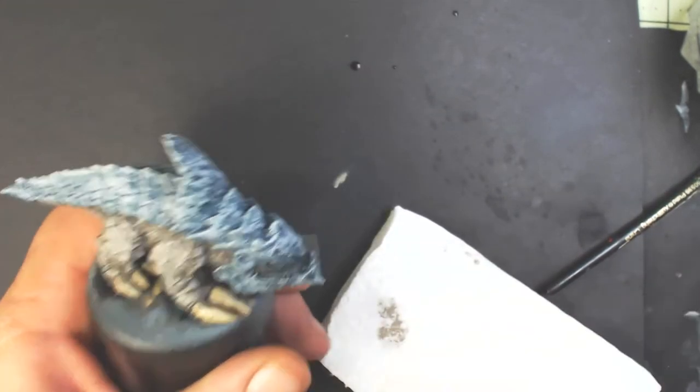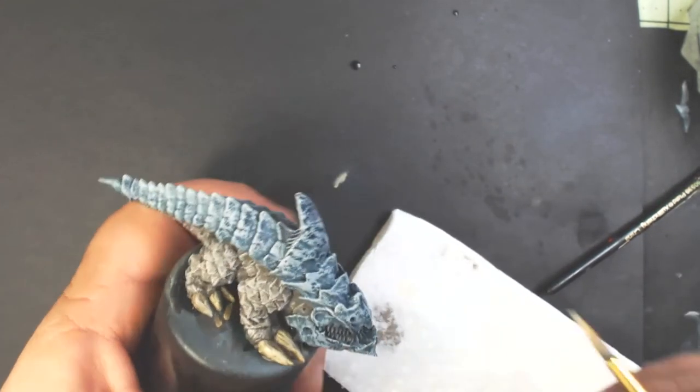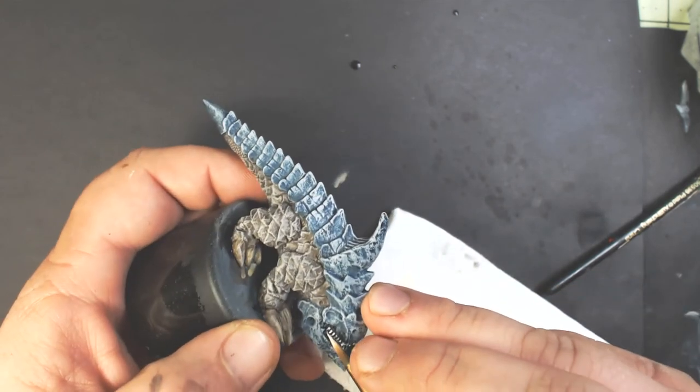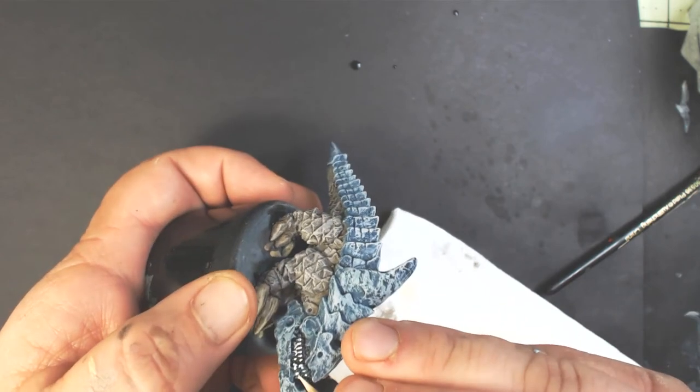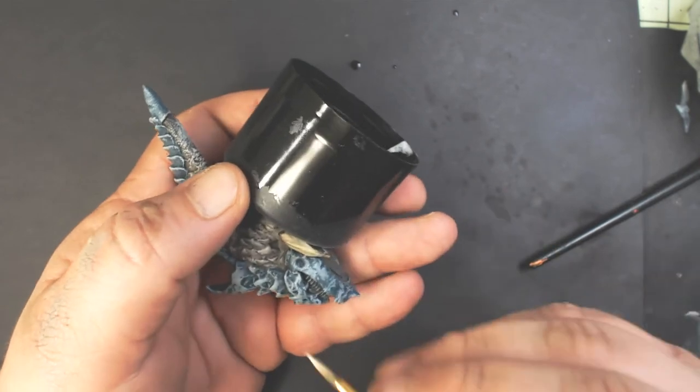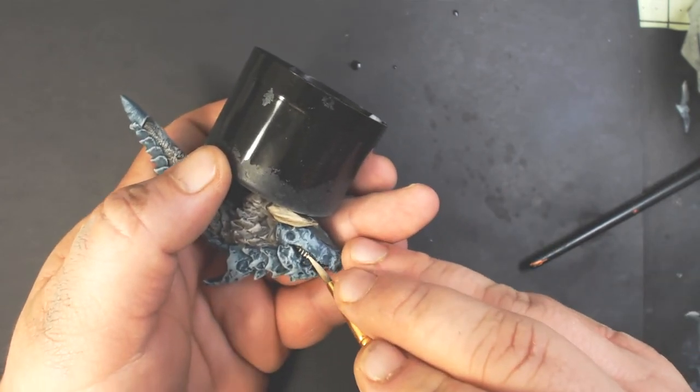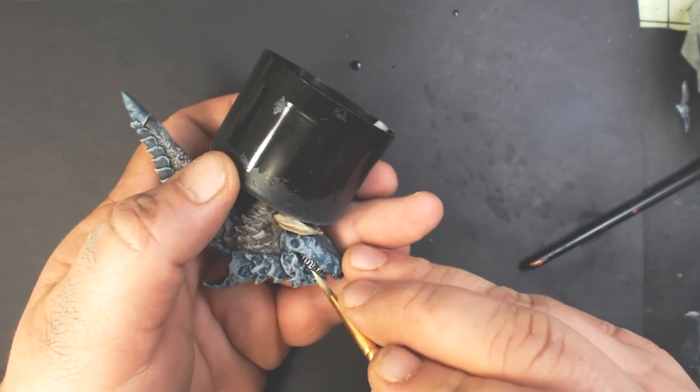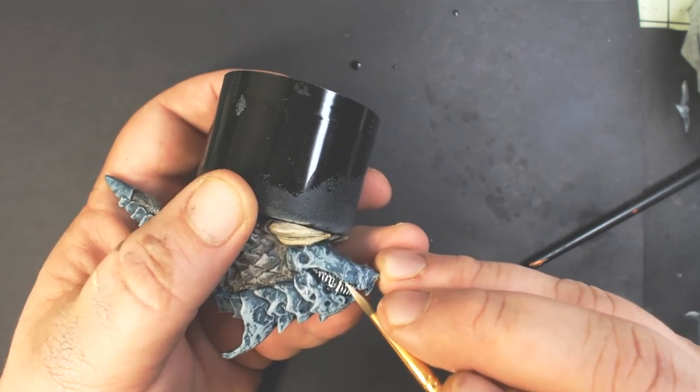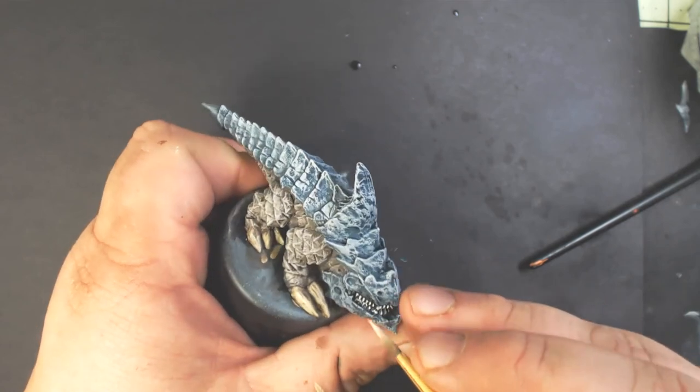All right. Now we've got some Vallejo Model Color Ivory. And I'm putting some on my brush and wiping most of the paint off. And basically kind of doing a dry brush, just holding my brush flat against the teeth and just sort of pulling them along so it just hits the top of them. So it's kind of like a very controlled dry brush. And I will do this two times to get good coverage.